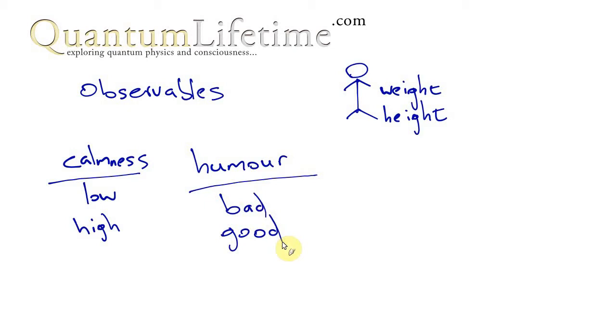Now these two observables are what we call incompatible in quantum physics, and the reason is that we can't measure one without disturbing the other. If we think about weight and height, they are compatible in the sense that we can measure weight and then height, and our measurement of height doesn't depend upon our measurement of weight.